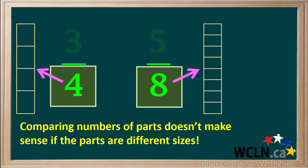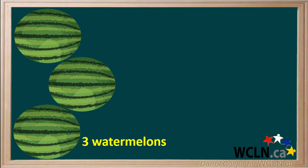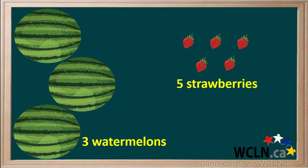Comparing numbers of parts does not really make sense when the parts are different sizes. It's much like comparing fruits. Here we have 3 watermelons and 5 strawberries. There's a greater number of strawberries than watermelons, but there's a lot more to eat in 3 watermelons than in 5 strawberries.